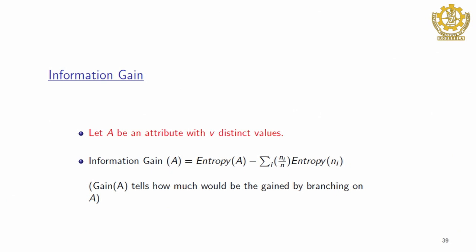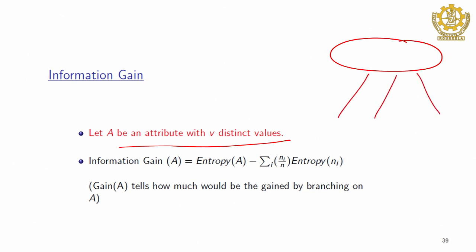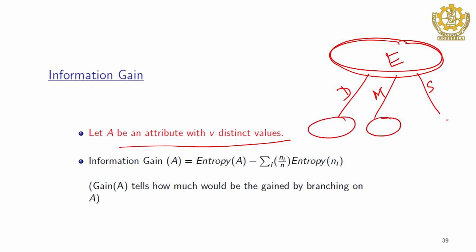There is a term called information gain. In the case of the impurity measure using Gini index, we also saw a term called gain. Let A be an attribute with V distinct values — for example, card type has three types. If we want to partition a node, we have three different values: in marital status we had divorced, married, and single. We compute the combined entropy, which is the weighted sum of individual entropies after splitting.